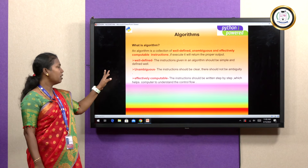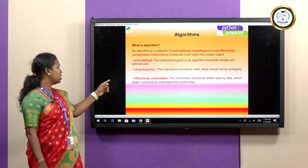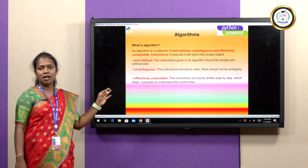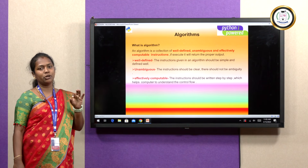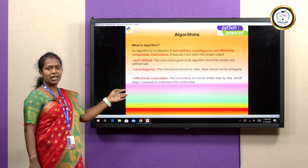First of all, what is well-defined? Well-defined means the instructions given in the algorithm should be simple and defined well. Unambiguous means it should be clear and not give any ambiguity. Ambiguity is an error. And then the next one is effectively computable.